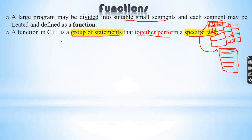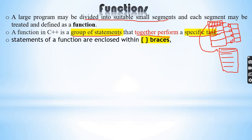The statements form a function to perform a specific task and objective. It is known as a function. The statements of C++ functions are enclosed within curly braces — opening and closing curly braces. The function performs one task.